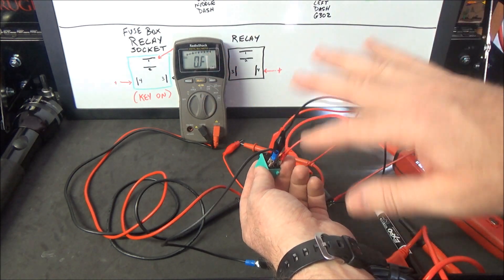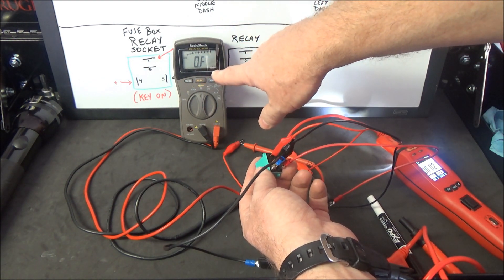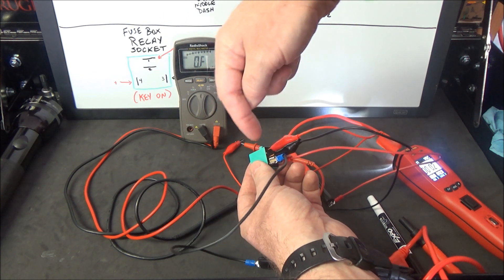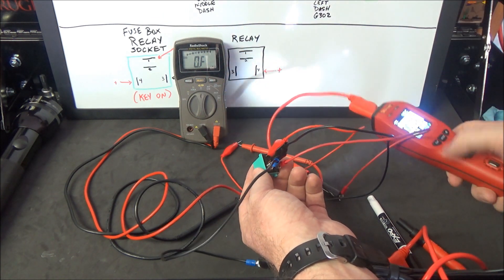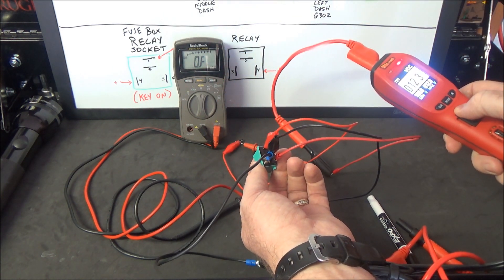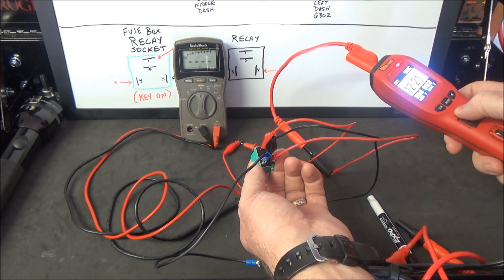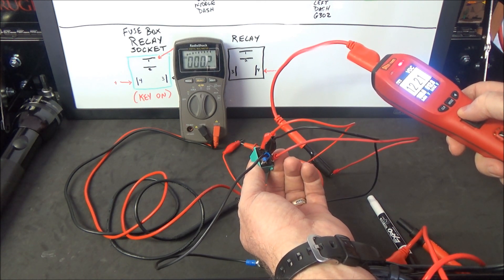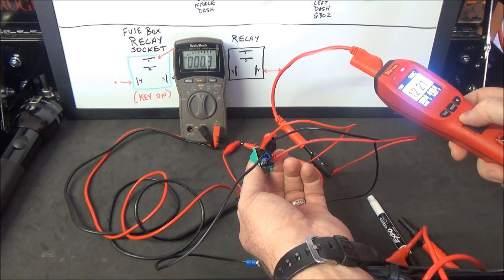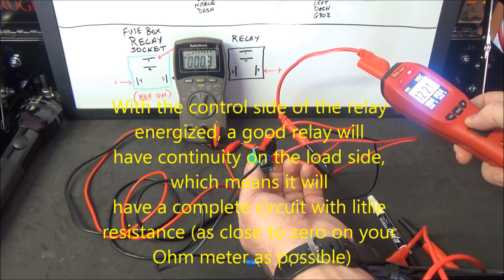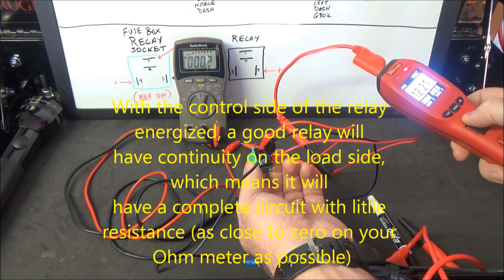In its off state like this, you should have an open just like that—the circuit is not complete. When we supply power, you should hear it click, which I did, and then you can see my voltmeter is showing 0.2 on the ohm scale. So that means this is good.